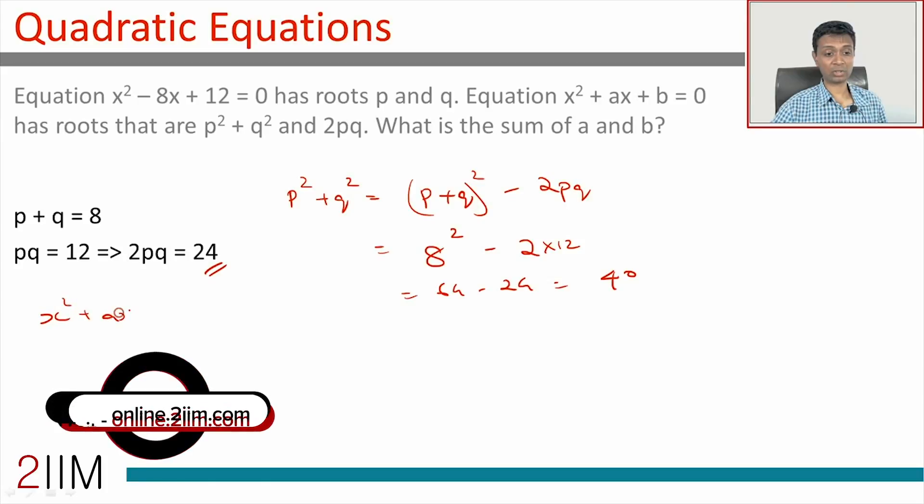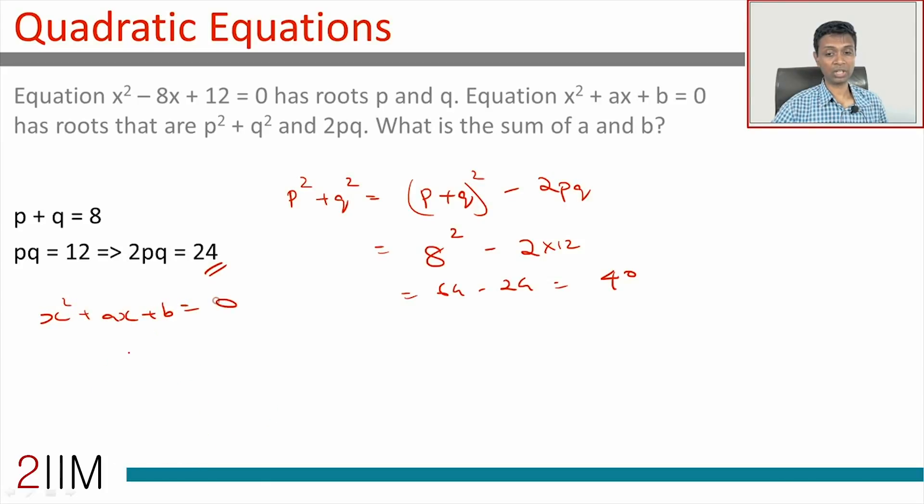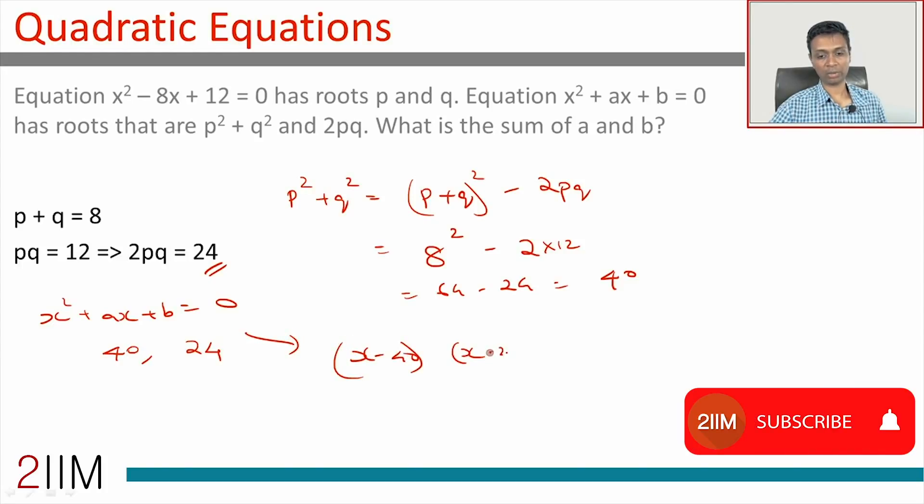The roots are p² + q² and 2pq, or this is nothing but (x - 40)(x - 24) = 0, which is x² - 64x plus whatever is 40 × 24...